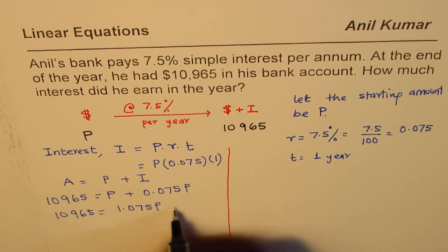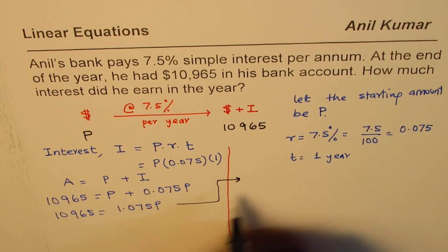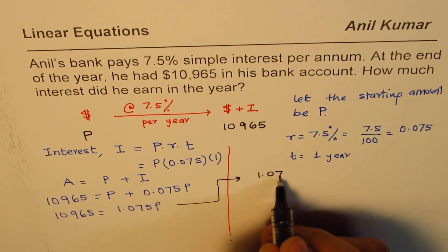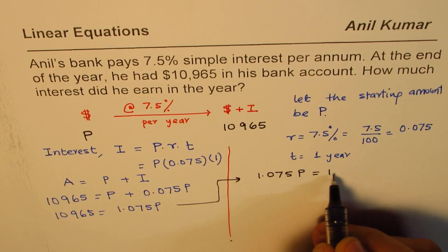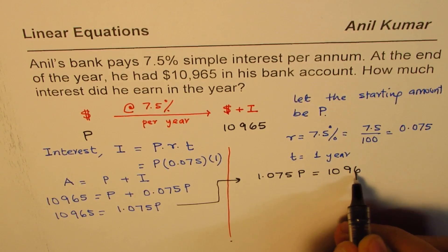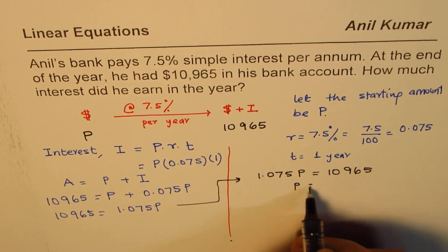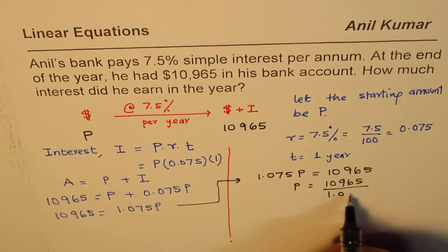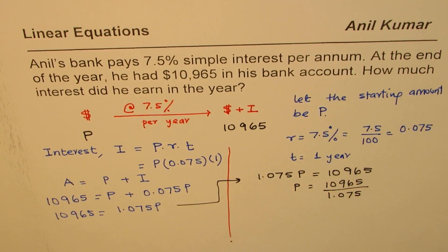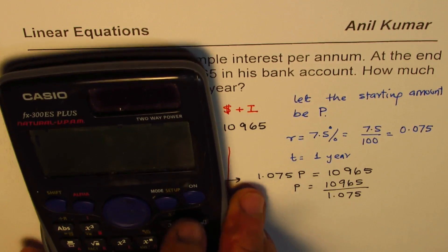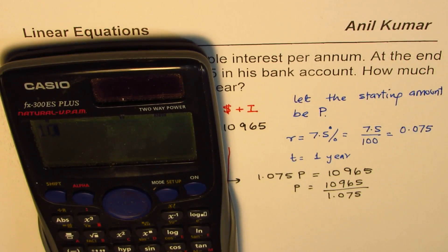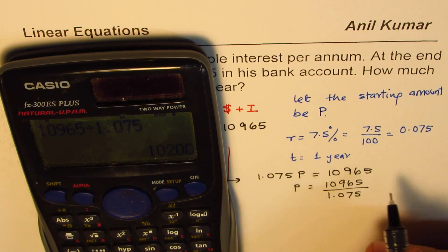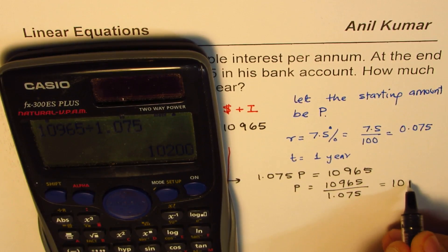Let me do it here. So, we are taking this equation to the right side. Let me say 1.075 times principle is 10,965. So, the principle should be 10,965 divided by 1.075. Let's use the calculator to find the answer.